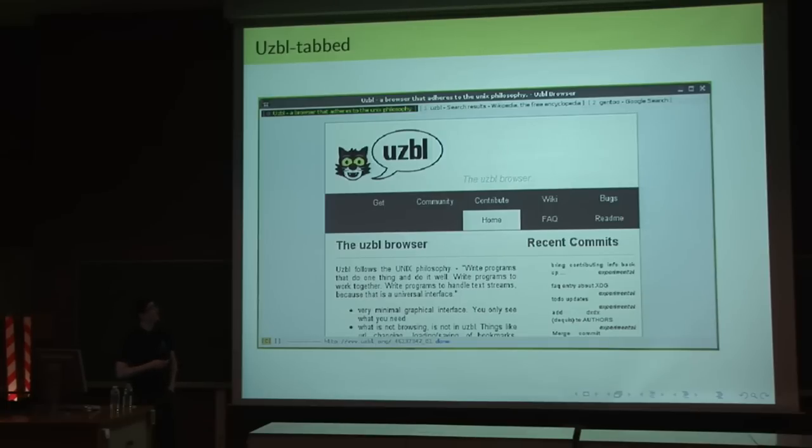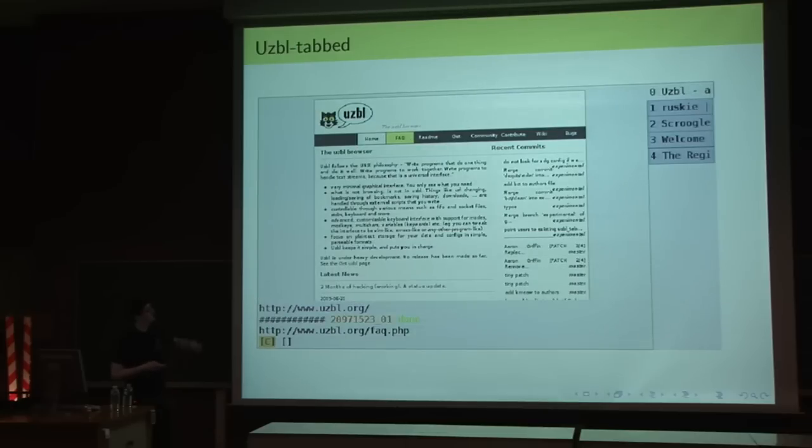This is how uzbl-tabbed looks like. It uses the Xembed feature to embed multiple uzbl browsers. Notice the GTK bar at the top to show where you are. But you can also use different representations, for example, GTK buttons. But we want to really abstract this feature so that you can use a tree or whatever representation you want.